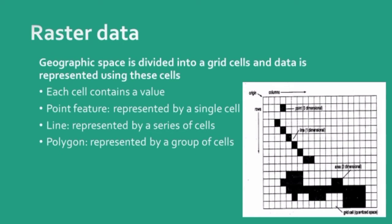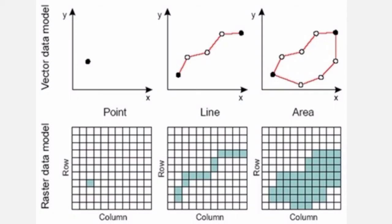A point feature is represented by a single cell. A line is represented by a series of cells rather than a single line. A polygon is represented by a group of cells in an area. So in a vector file, you have points, lines and areas as we draw on paper, but in a raster data model you have columns of cells for point, line and area.